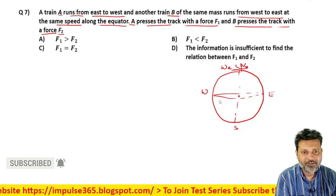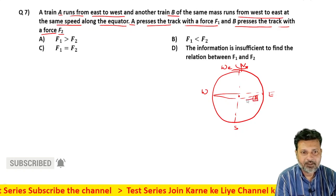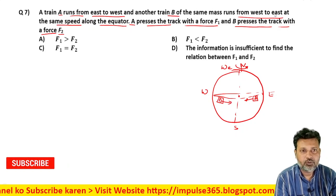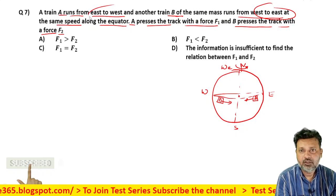One train goes from east to west, the A train going this way. And train B goes from west to east, as written in the question. B goes west to east, and A goes east to west.